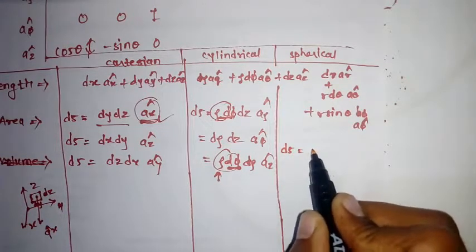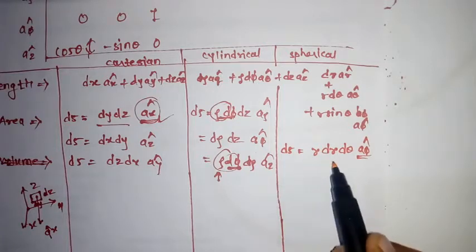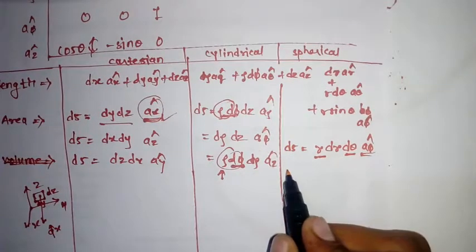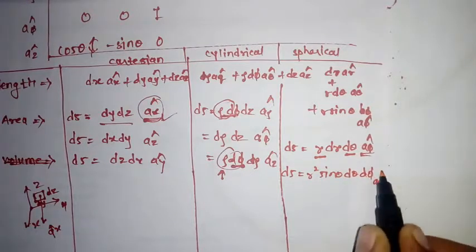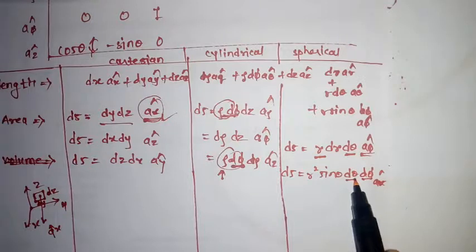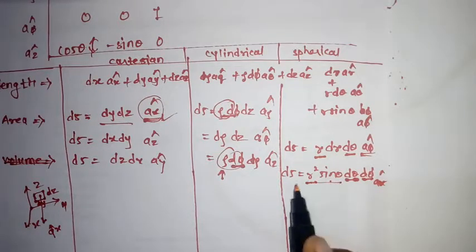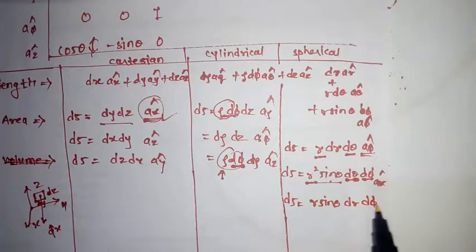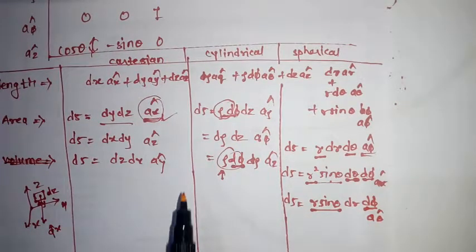For area in spherical coordinates: ds equals r dr d_theta when a_phi is normal. If d_theta is there, you must write r. We also have ds equals r squared sine(theta) d_theta d_phi when a_r is normal — in d_theta write r, and in d_phi write r sine(theta), giving r squared sine(theta). And ds equals r sine(theta) dr d_phi a_theta cap, because d_phi is there so r sine(theta) comes with it.